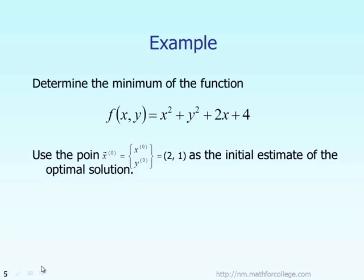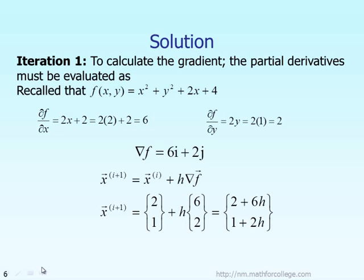According to the theory, the first thing we do is come up with an initial estimate — the initial guess of the solution. The initial guess x at iteration zero has two components: x and y. Suppose at iteration zero, x equals 2 and y equals 1. That is our initial guess, and we proceed the algorithm from there toward the optimum solution.